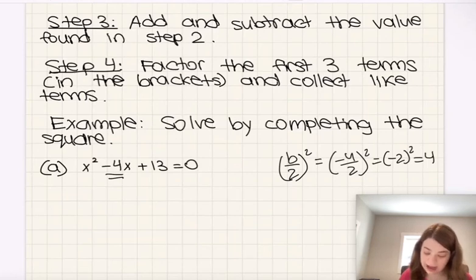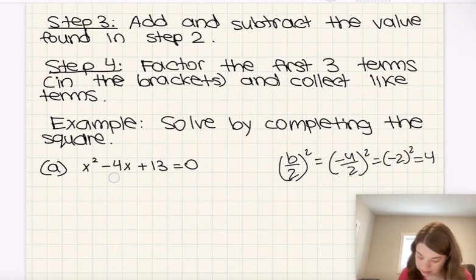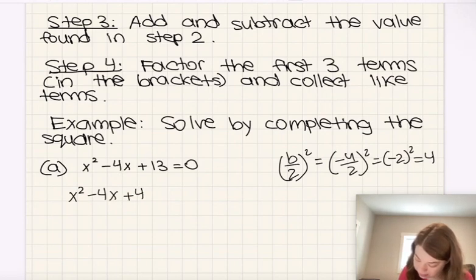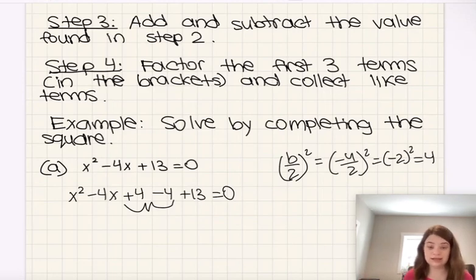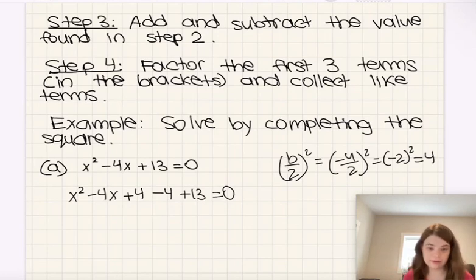Step three is to add and subtract the value found in step two. So we're going to have x squared minus 4x plus 4 minus 4 plus 13 equals 0. Essentially what I did is I just rewrote what we had, but I added plus 4 minus 4. And of course, that simplifies to 0, so we're allowed to do that — we can add 4 as long as we also subtract 4.